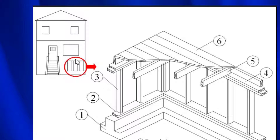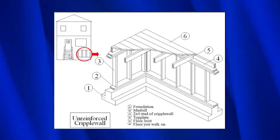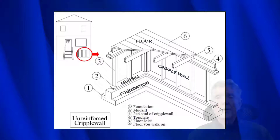A good way to find out if you have cripple walls is if you have more than two or three steps leading into the front door — good chance you have one. Here's a blown-up view of a cripple wall. This is the floor that you would walk around on, this right here is the cripple wall itself, this is what's called the mud sill, and then this here is the foundation.